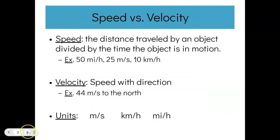Just to recap quickly the difference between speed and velocity: speed is the distance traveled by an object divided by the time the object is in motion — so 50 miles per hour, 25 meters per second, 10 kilometers per hour, that sort of thing. Velocity is speed with direction, so where speed is distance over time, velocity is displacement over time.